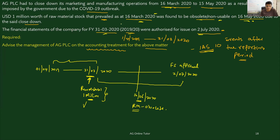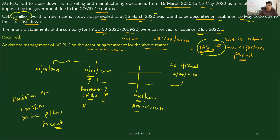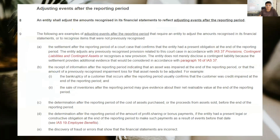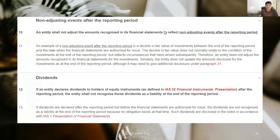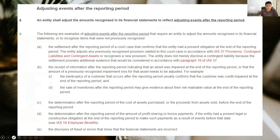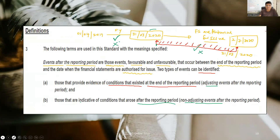Based on this, an inventory provision of 1 million will have to be charged to the profit or loss. So there should be a provision of 1 million in the profit and loss account. This is the answer for this particular question, which is in relation to IAS 10. In the next video, I will discuss what are adjusting events and what are non-adjusting events after the reporting period with regard to IAS 10.